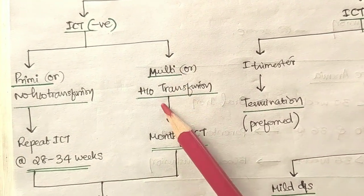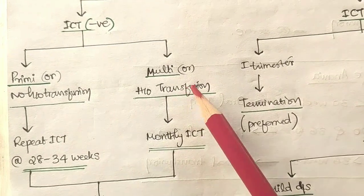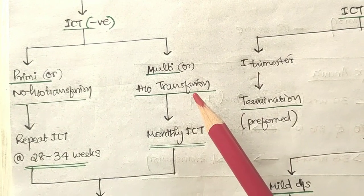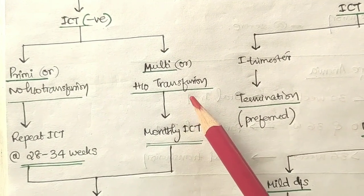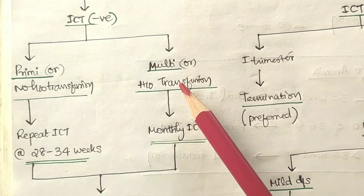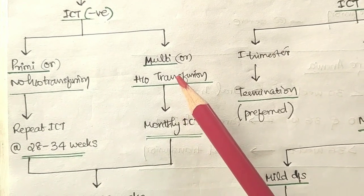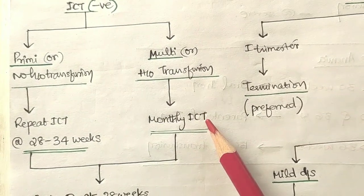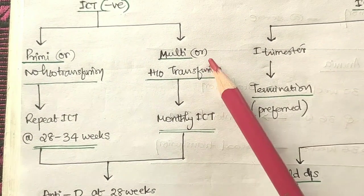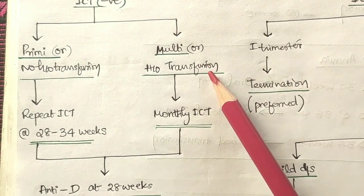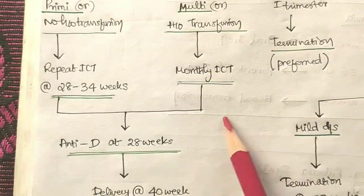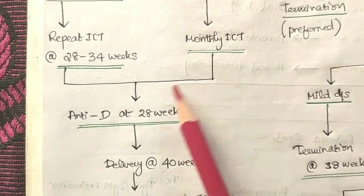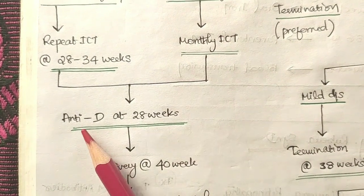If the mother is multigravida or has a history of blood transfusion, we suspect RH incompatibility due to possible prior mixing of fetal and maternal blood. In these cases, we perform a monthly indirect Coombs test to monitor antibody levels.